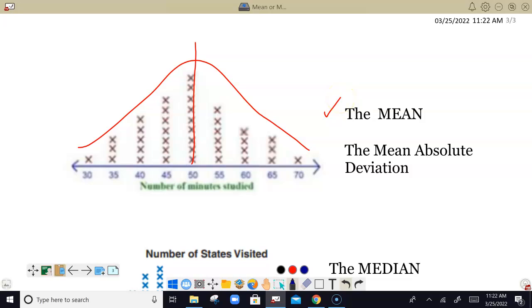And along with the mean, that's our measure of center, then our measure of variability will be the mean absolute value. So if we're using the mean for the center, then the mean absolute deviation is what we use to measure the variability.